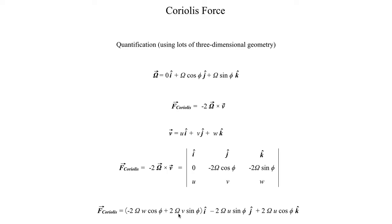Plus 2Ω, again omega is the Earth's rotation, the angular velocity of Earth's rotation, v meridional wind, times the sine of our latitude φ, and that's all the i-hat component, or the zonal component of the Coriolis force.